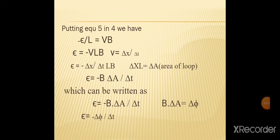یہاں Δx اور l کو multiply کریں تو Δx·l = ΔA، جو loop کا area ہے۔ تو e = −BΔA/Δt۔ اسے dot product کی form میں لکھیں: e = −B·ΔA/Δt۔ اور B·ΔA = Δφ یعنی change in magnetic flux، جو ہم نے last lecture میں study کیا تھا۔ تو e = −Δφ/Δt۔